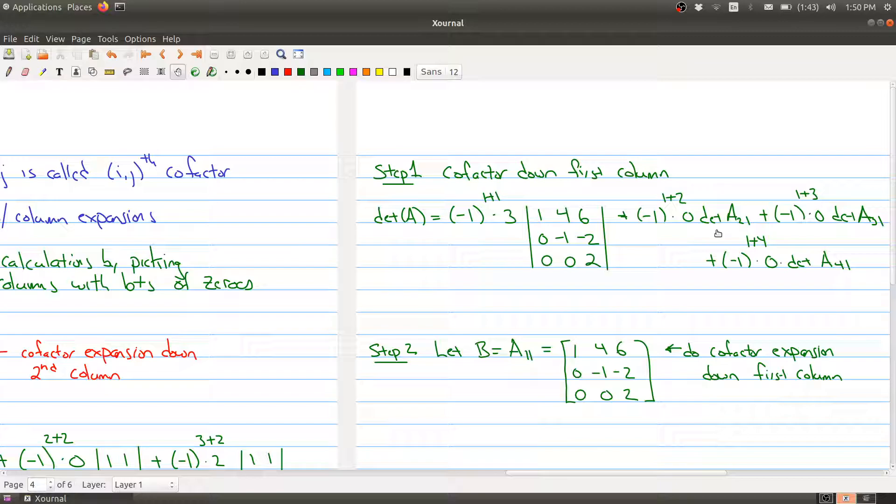Now I'm not doing all the details right because I have all these zeros here so they actually all just become zero. So the determinant of my matrix A really boils down to now finding the determinant of this 3x3 matrix.